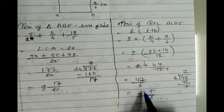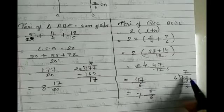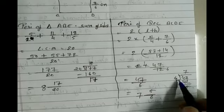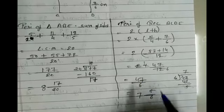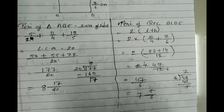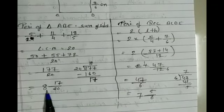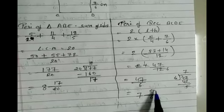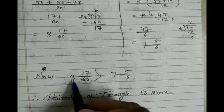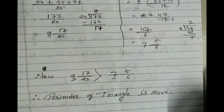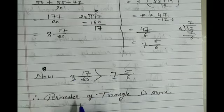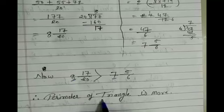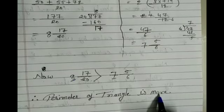Converting 47/6 to a mixed fraction: 6 × 7 = 42, remainder 5, so we get 7 and 5/6. Now comparing both: 8 and 17/20 versus 7 and 5/6. Since the whole number 8 is bigger than 7, the perimeter of the triangle is more than the perimeter of the rectangle.